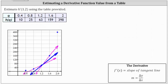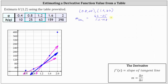Remember, to find the slope of a line passing through two points, we need to determine the change in y divided by the change in x. So let's first find the slope of the secant line on the left using the points (0.8, 25) and (1.2, 63). We'll call this m sub secant 1, which is equal to the change in h of q divided by the change in q, giving us the quantity 63 minus 25 divided by the quantity 1.2 minus 0.8. Simplifying, we have 38 divided by 0.4, which equals 95.